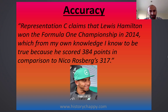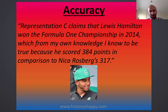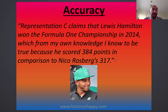So what might that look like? Well, one way of doing that would be if representation C, a mythical representation, claims that Lewis Hamilton won the Formula One World Championship in 2014 — which he did — I could say I know that from my own knowledge to be true, and I can show off and really impress the examiner, because he scored 384 points in comparison to Nico Rosberg's 317. So I've cross-referenced the claim in the representation that Lewis Hamilton won with my own knowledge, and I can challenge or support what it says — or note an inaccurate claim — by cross-referencing with my own knowledge to see whether or not it's true or to what extent it's accurate.